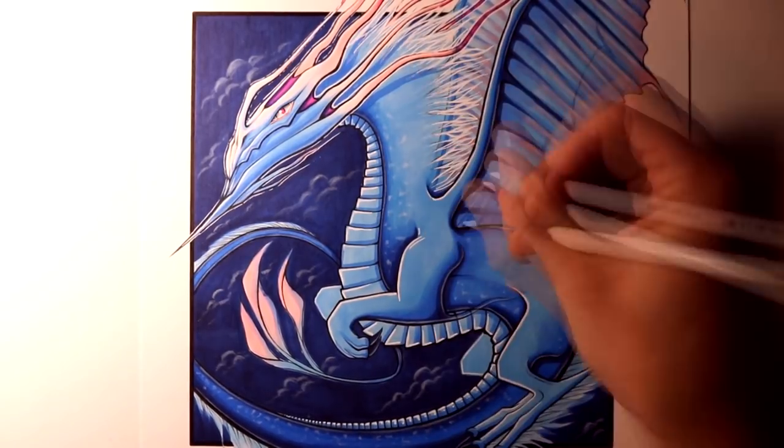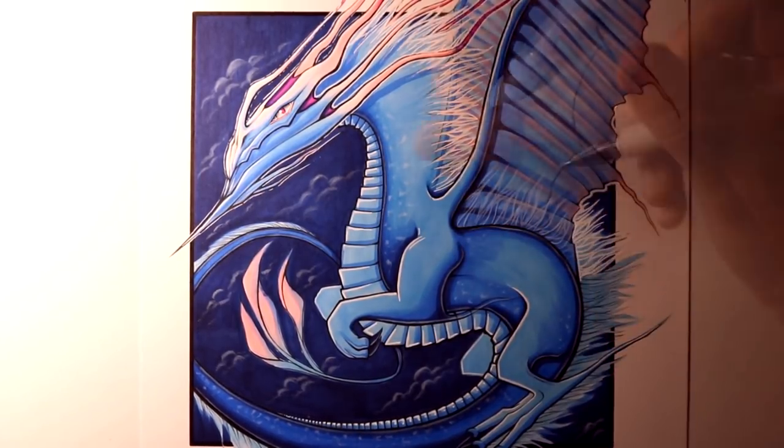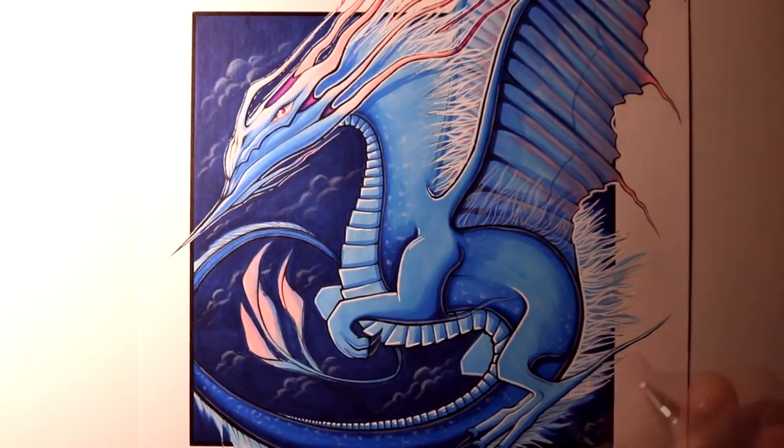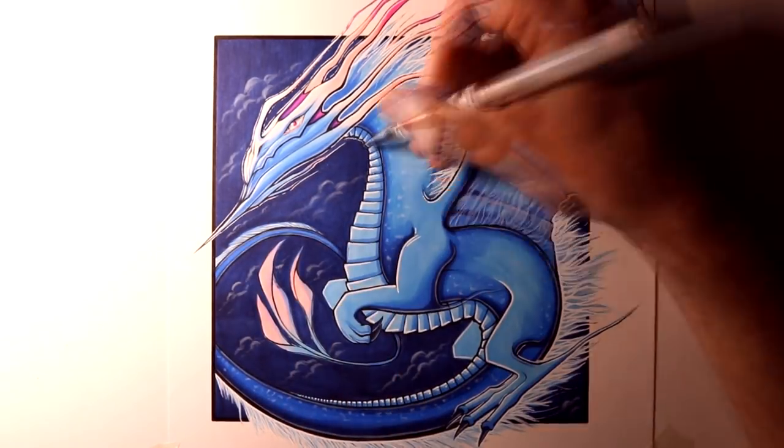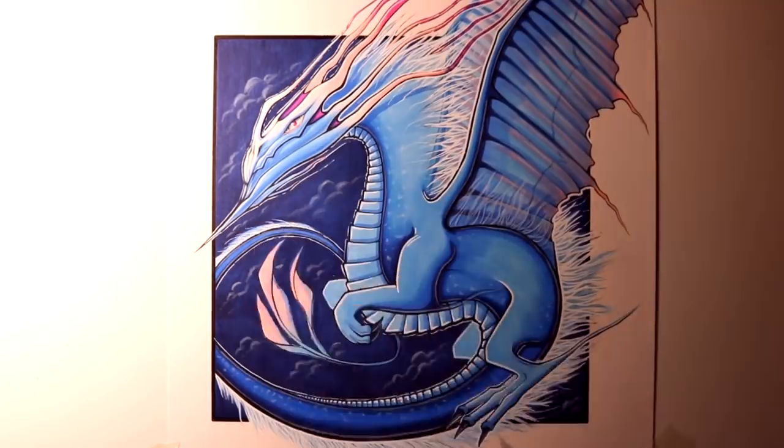Then I actually used a mixture of these two, the white pencil and the white ink pen, to create that transparent effect around the dragon's back and behind its wing, just blending between the two, and I was really happy with this.